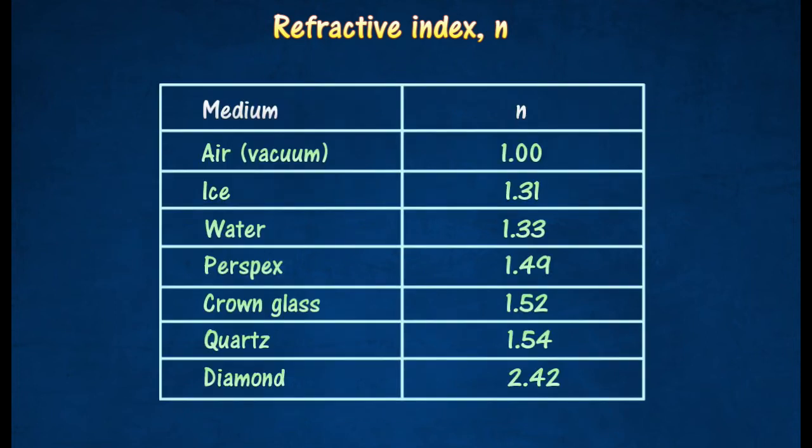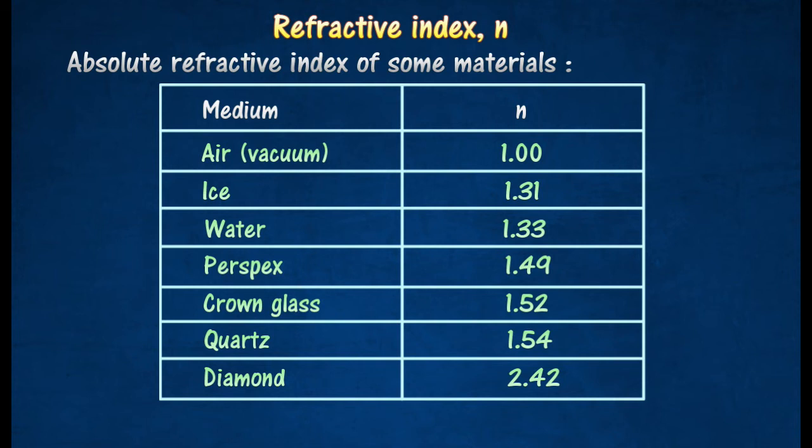The table below shows the absolute refractive indices N of some common materials. A material with a higher refractive index has a greater bending effect on light.